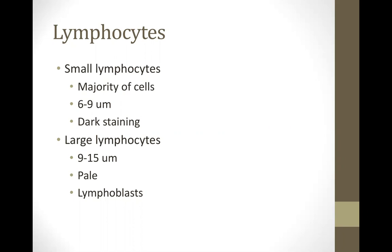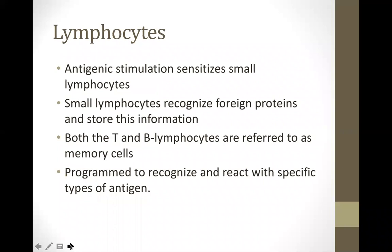Large lymphocytes range from 9 to 15 micrometers, have pale staining, and are actually your lymphoblasts — immature cells. Lymphocytes are increased in viral infection, but for the lymphatic system they also serve in antigenic stimulation that synthesizes small lymphocytes. Small lymphocytes recognize foreign proteins and store this information as memory cells. There are two types: T lymphocytes and B lymphocytes, both referred to as memory cells, programmed to recognize and react with specific antigens.